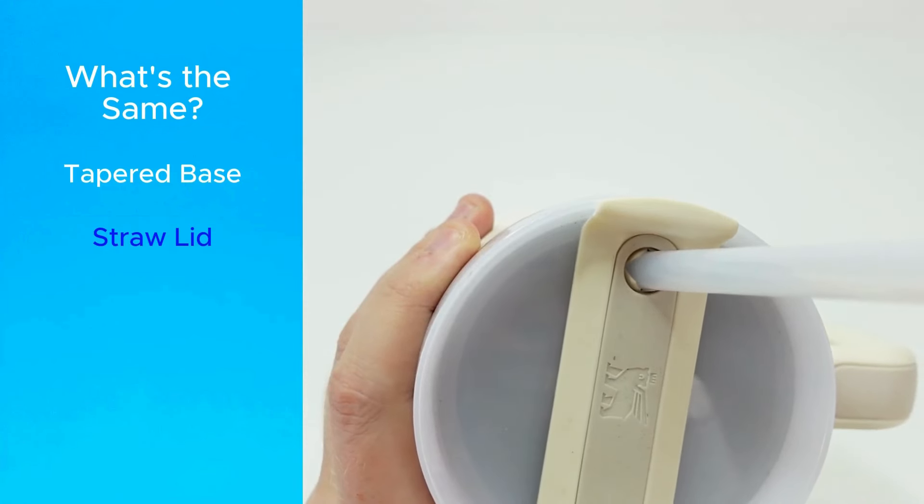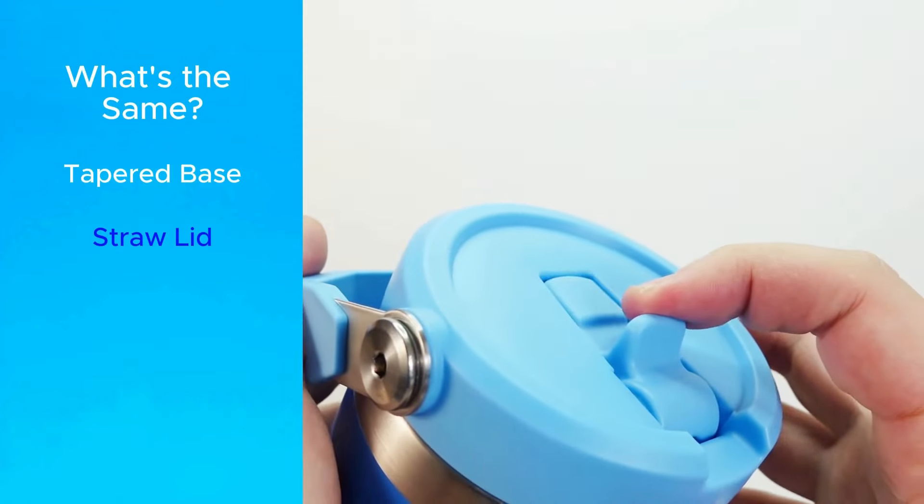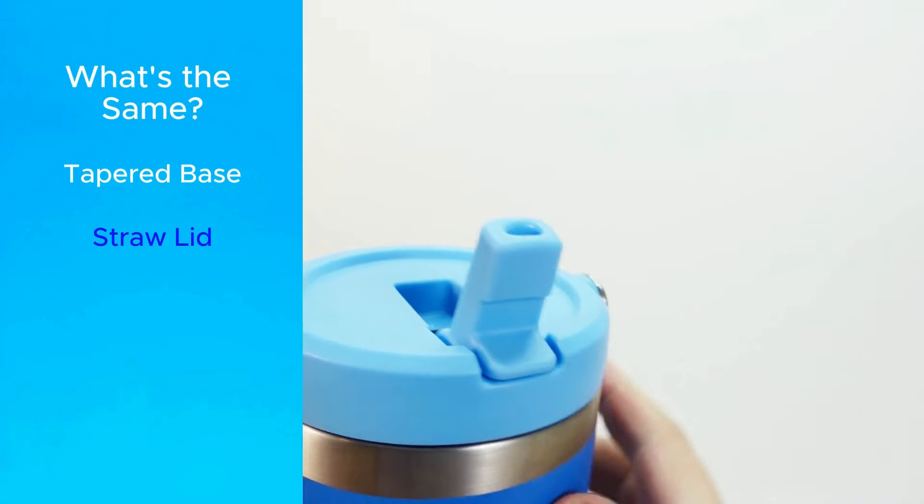Number two, they're both straw lids. This is another positive for driving because straw lids make it easier to keep your eyes on the road.